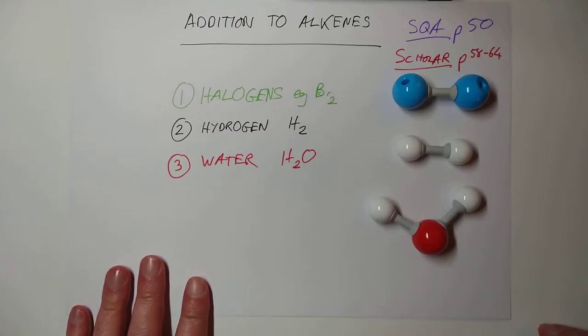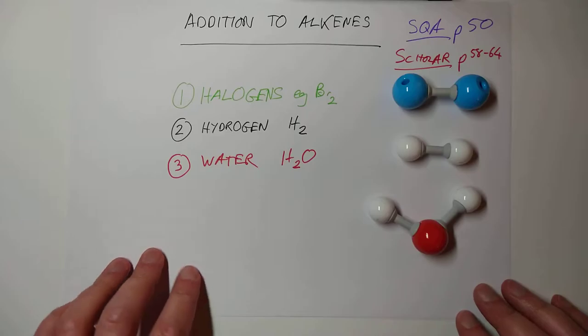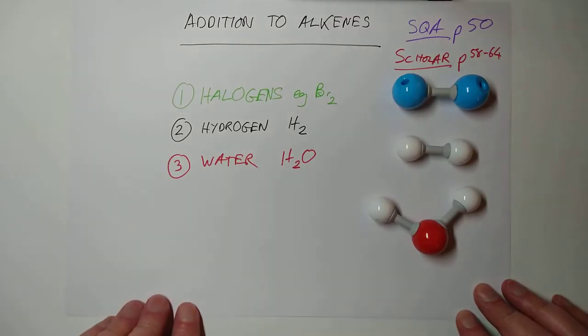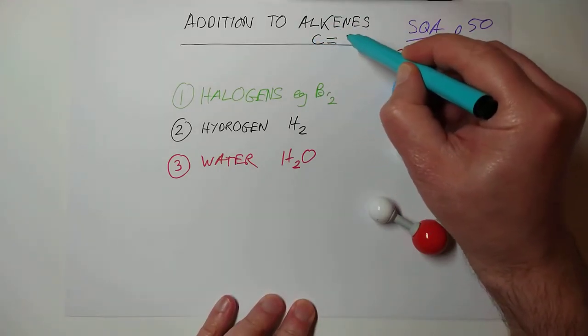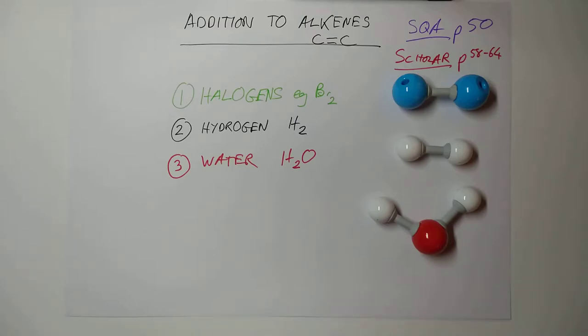Good afternoon, folks. Welcome back to National 5 Chemistry. Today, we're going to look at addition reactions for the alkene family. And just in case you've forgotten, although you really shouldn't have, if it's alkenes, that means, of course, it contains a C double bond C. These are the alkenes.